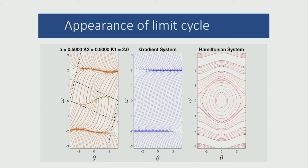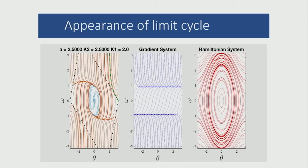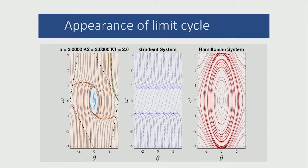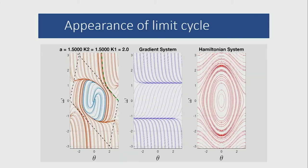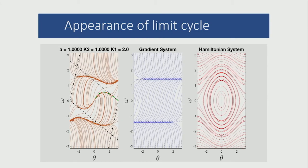But we don't always start from a stable limit cycle and end up in the two. Sometimes it's quite the opposite. In this case, where we let A equal K1, we start from the two trajectories and enter our stable limit cycle.